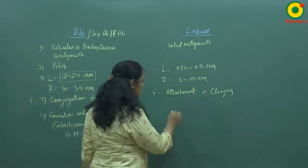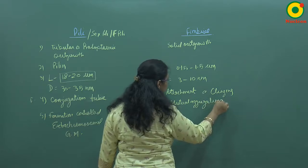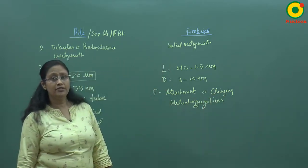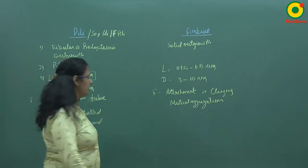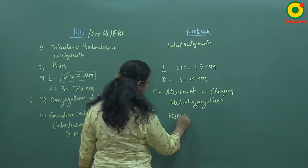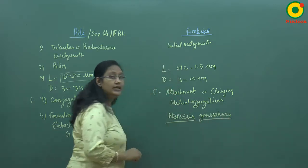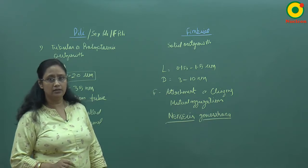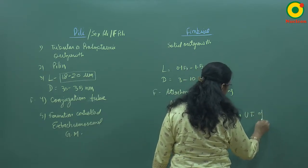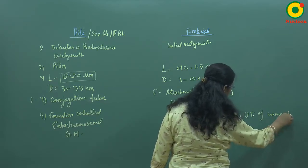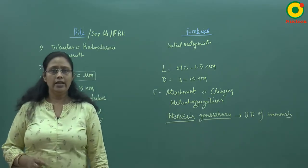Fimbrae also plays a role in mutual aggregation. It helps in the attachment of bacteria to the host surface. For example, this bacteria attaches to the urinary tract of mammals with the help of its fimbrae and causes disease.